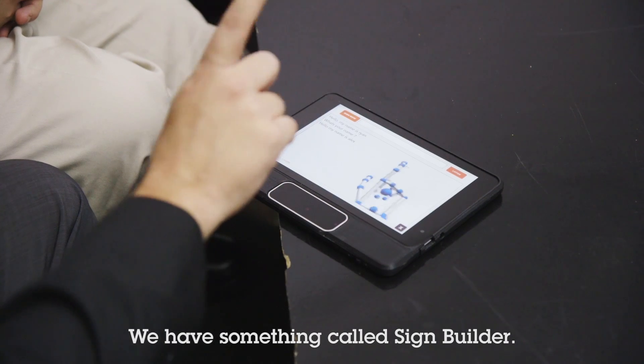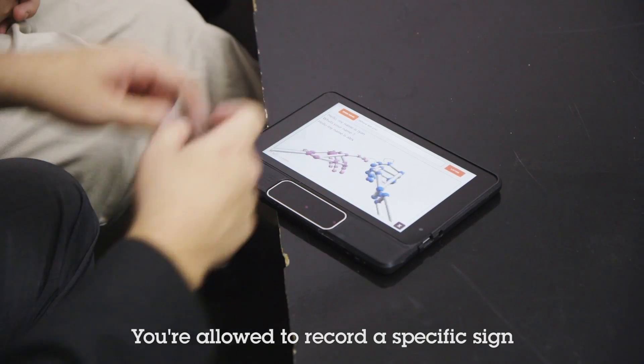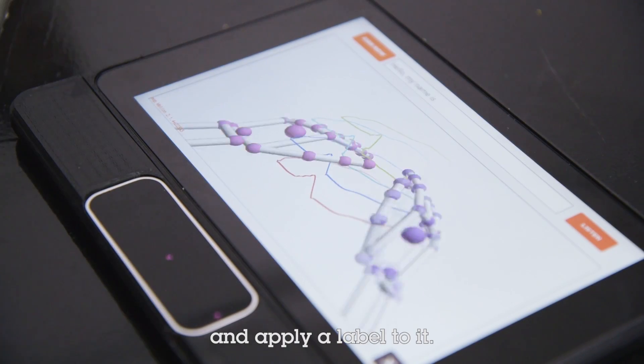You have something called a sign builder. You're allowed to record a specific sign and apply a label to it.